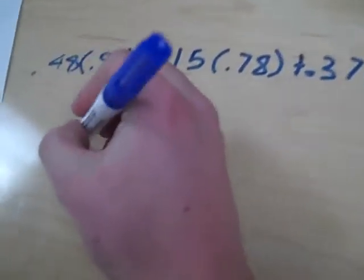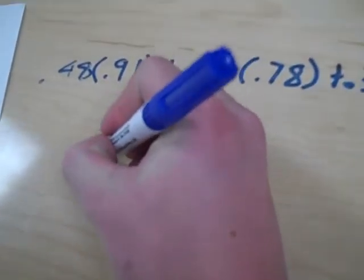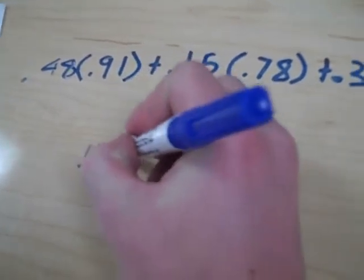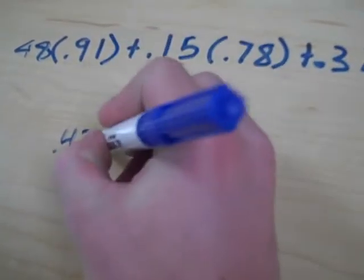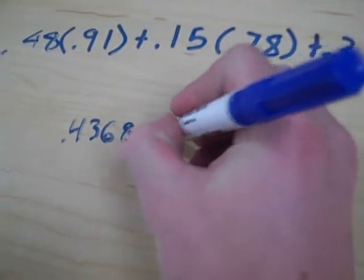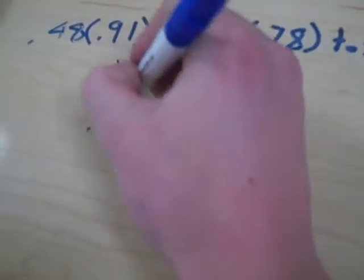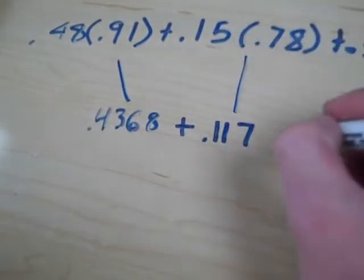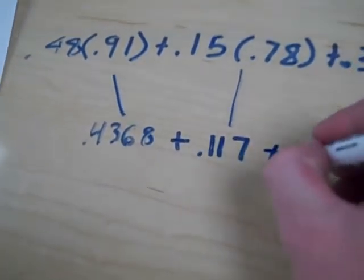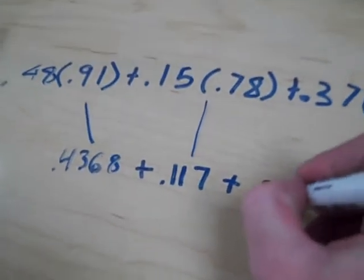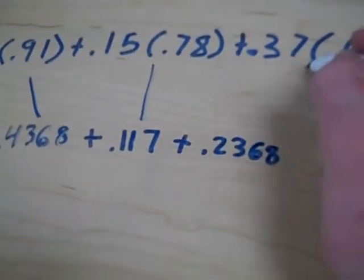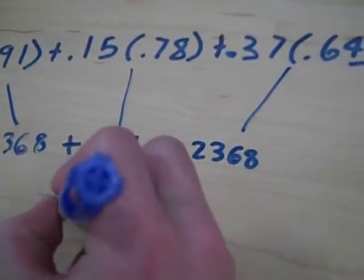So now Patrick is going to write the answers to each of those multiplication problems. So the 48% and the 91% gives the decimal 0.4368 plus 0.117 plus 0.2368.